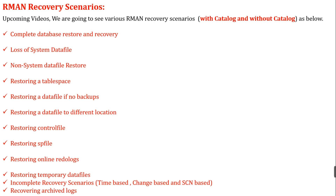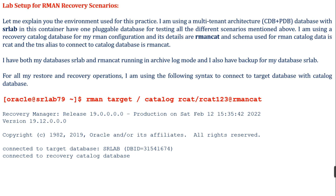Next, restoring a tablespace, then restoring a datafile with no backups, and restoring a datafile to a different location. After that, restoring a control file, then restoring a spfile, and restoring an online redo log file if it is missing or corrupted. Then restoring datafiles, and next an incomplete recovery scenario which is time-based, change-based, or SCN-based. After that, recovering RMAN block missing and corrupted block files.